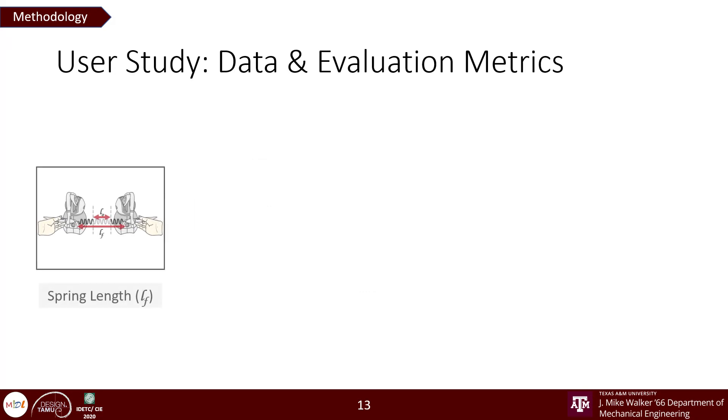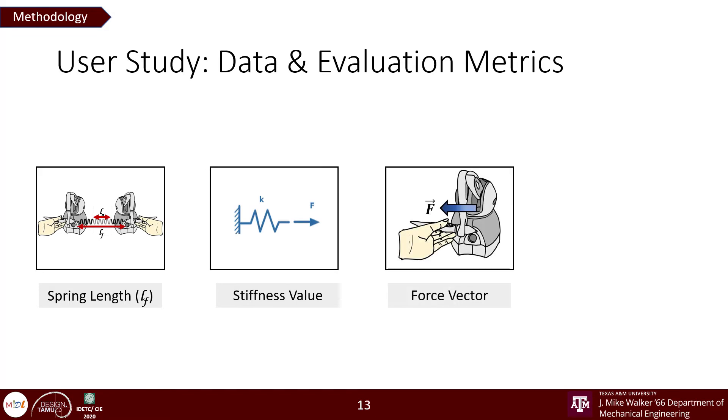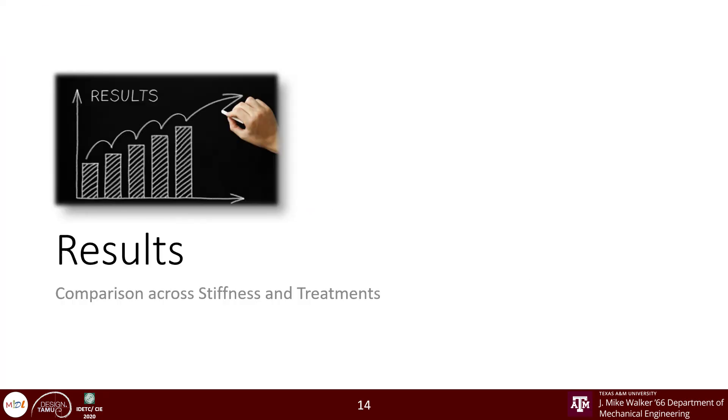For each trial, we collected the spring length at which asymmetry was identified, the value of stiffness used for that particular trial, using which we compute the force vector for the given experimental condition, and finally the time the participants took to perceive asymmetry of forces in their hand. We conduct two data comparisons and the results are as follows.